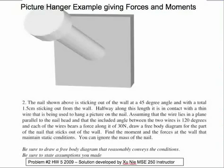Draw a free body diagram for the part of the nail that sticks out of the wall. Find the moment and the forces of the wall that maintain static conditions. You can ignore the mass of the nail.